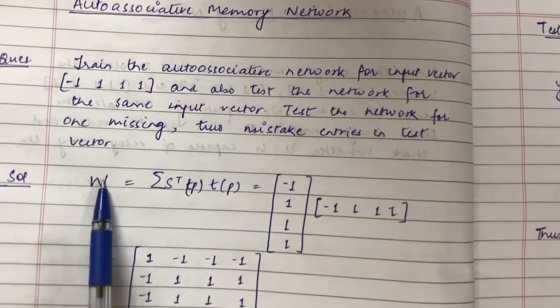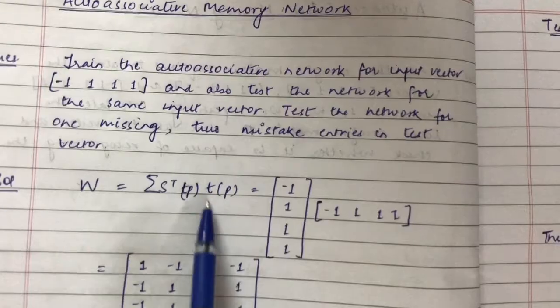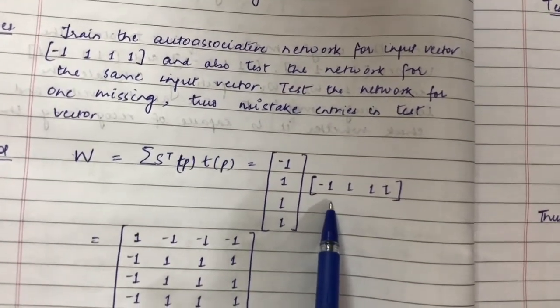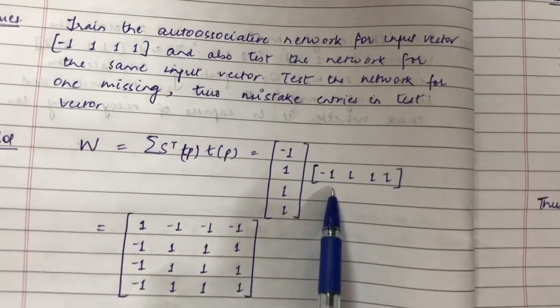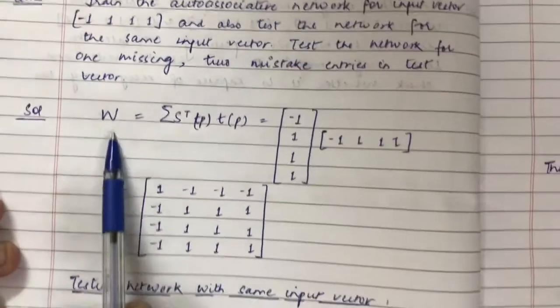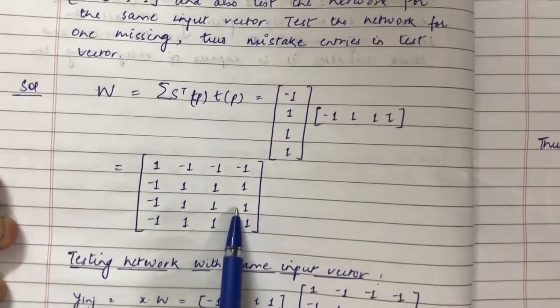Here we will obtain the weight matrix by taking the transpose of the input vector and multiplying it by the input vector itself, unlike in hetero-associative where we were given a corresponding output for the given input vector. So we will obtain a 4x4 weight matrix.